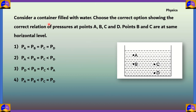This is the first question. Consider a container filled with water. Choose the correct option showing the correct relation of pressures at points A, B, C, and D. Points B and C are at the same horizontal level.